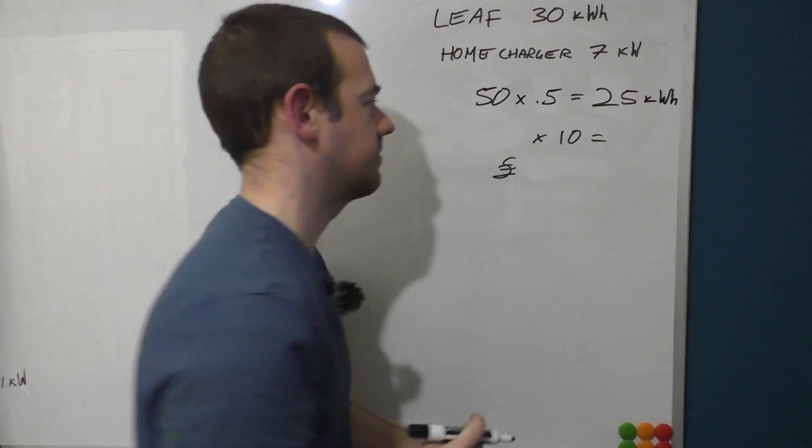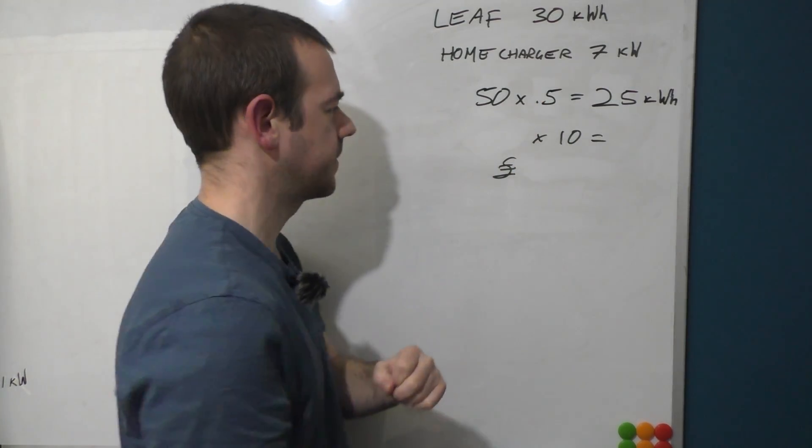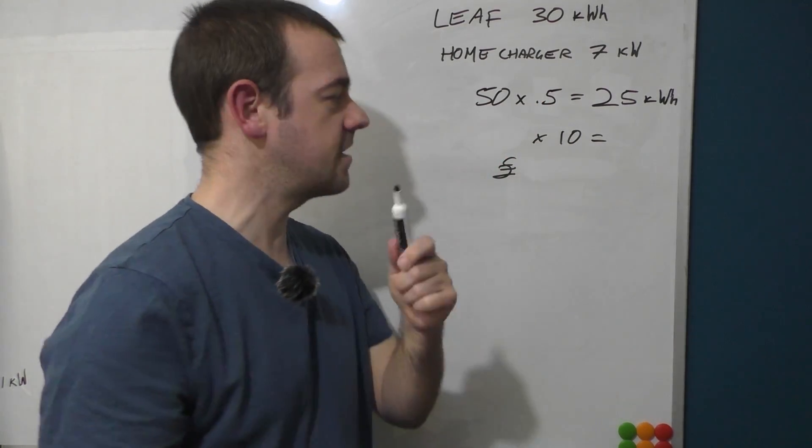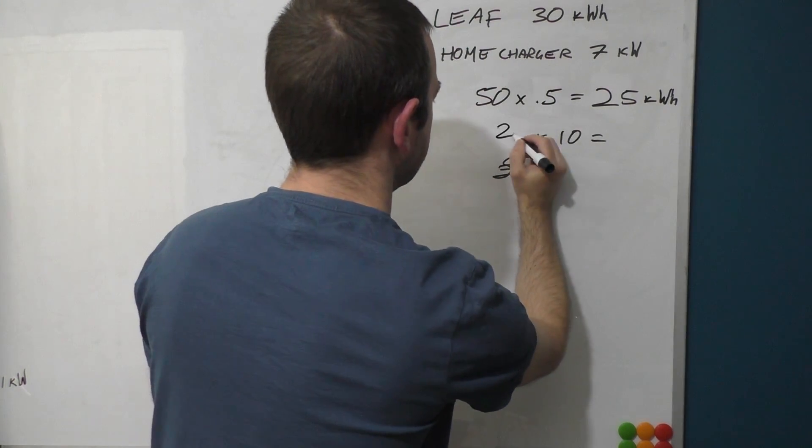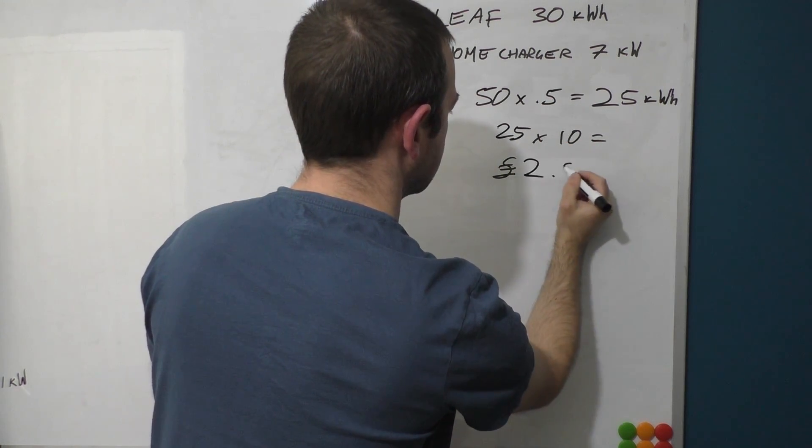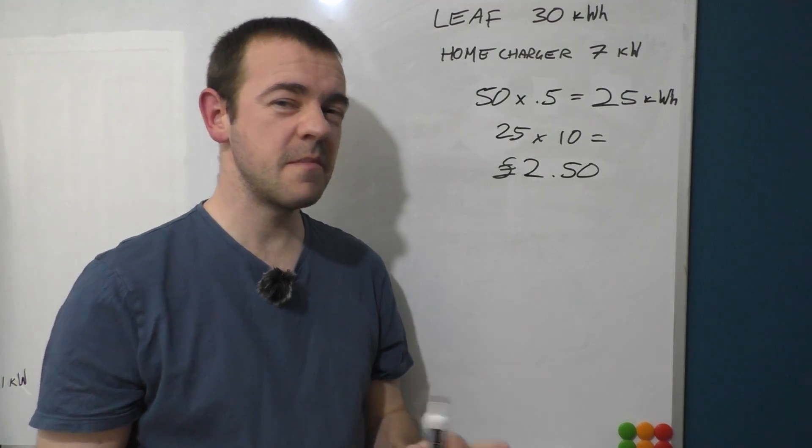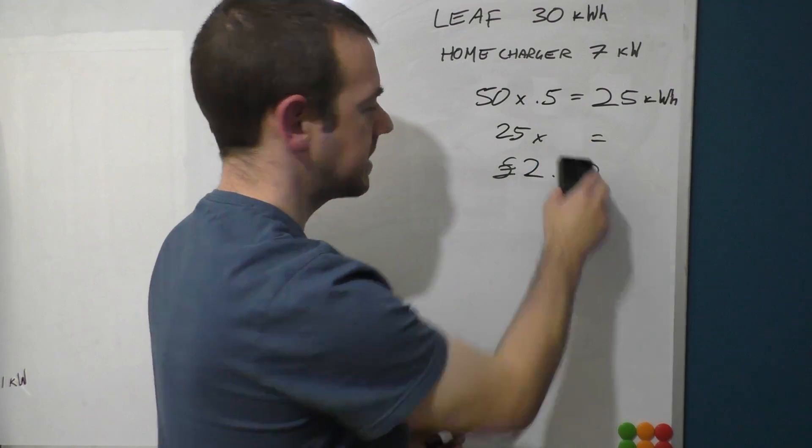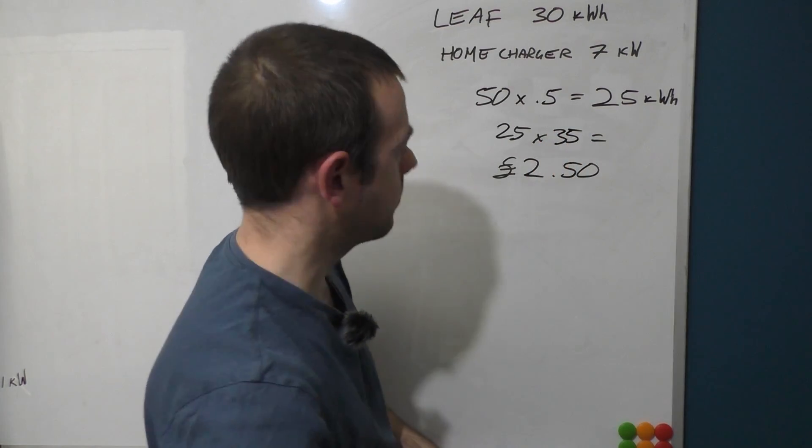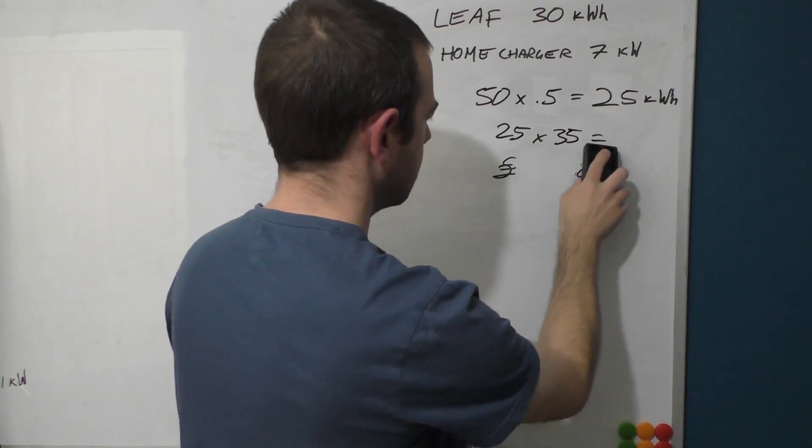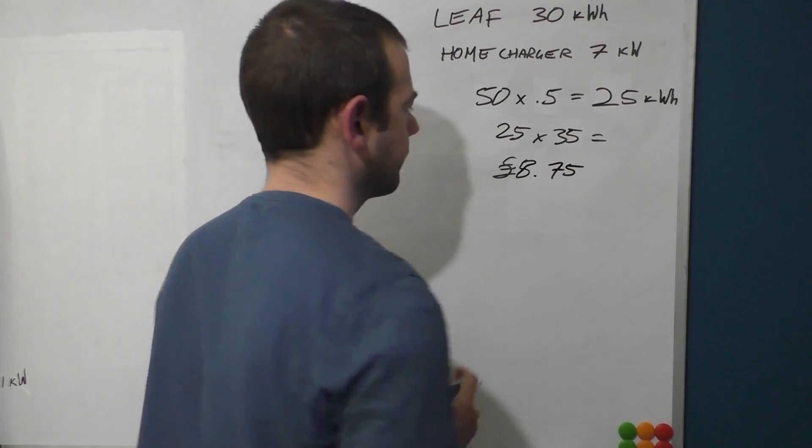So we will end up with 25 kilowatt-hours of energy in 30 minutes rather than four hours. Obviously you won't be charging that at home, but if you did theoretically do it at 10 pence per kilowatt-hour, it would be 25 times 10, and that equals two pounds 50. Now most rapid chargers charge 30, maybe 35 pence, so obviously that would be 35, and that would not be two pound 50. That would be eight pound 75p.